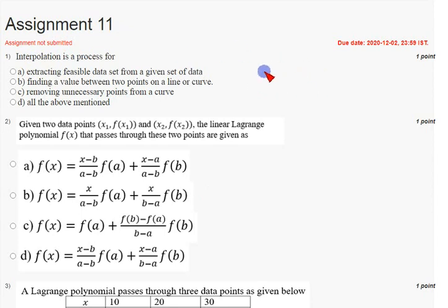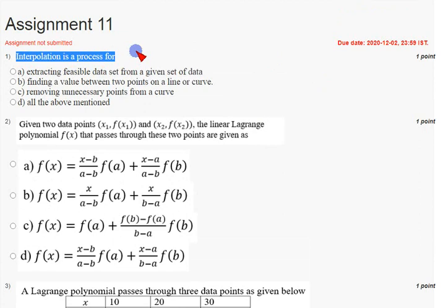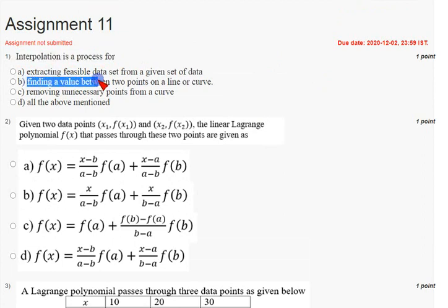Coming to the first question — these are 100% correct answers, so don't worry. The first question asks: interpolation is a process for — and the answer is option B, that is, finding a value between two points on a line or curve. So first question answer is option B.